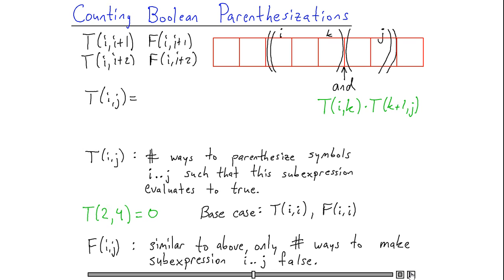So returning to my expression for T(i,j) is going to be the sum over all intermediate splitting points k and these can range from i up to j-1. And here I need to write an expression which tells me for each particular value of k how many ways I can parenthesize the whole expression if I were to split at k. We've already seen that if the operator following the kth symbol is an and, then this formula is T(i,k) times T(k+1,j).